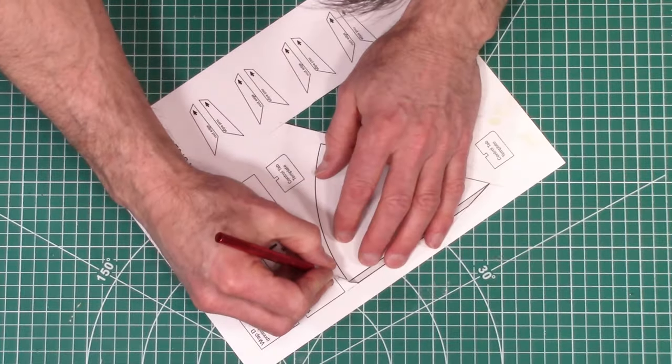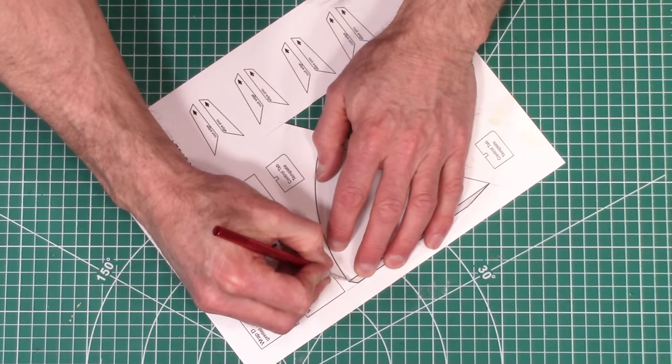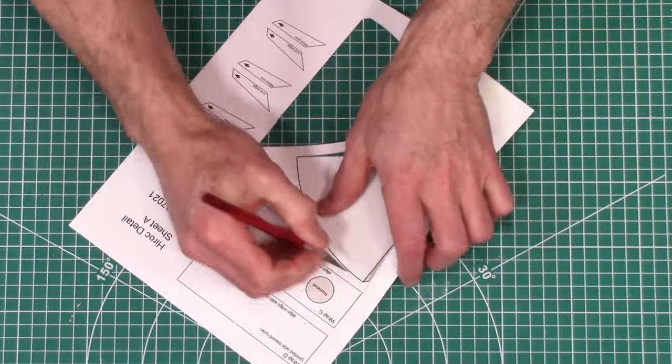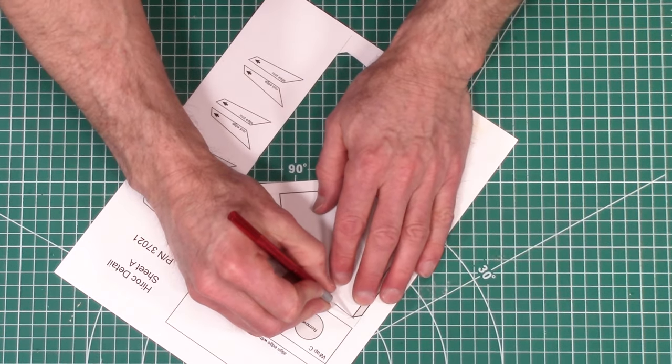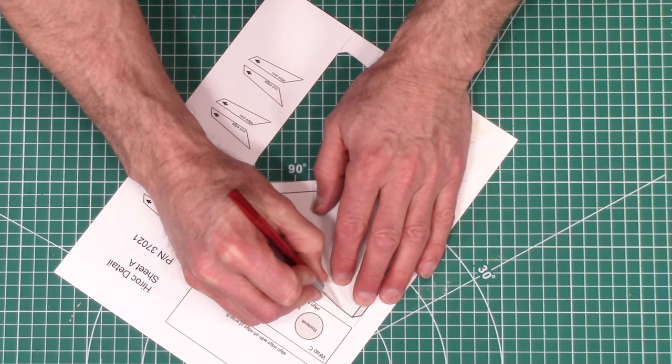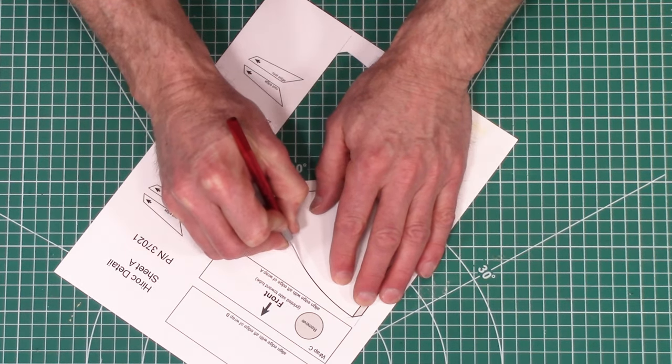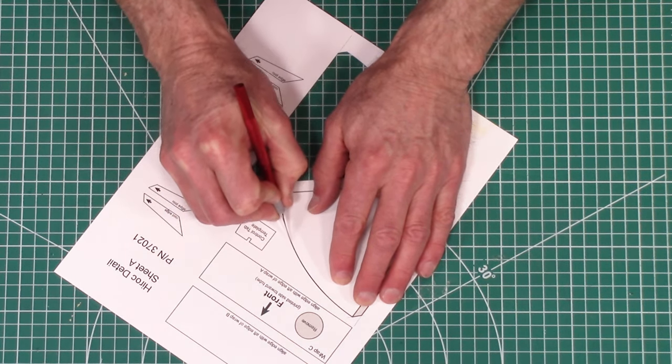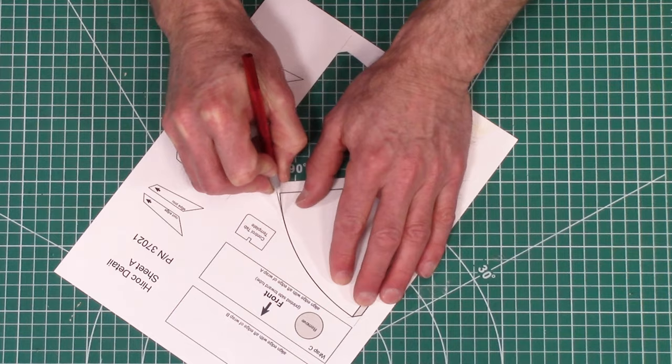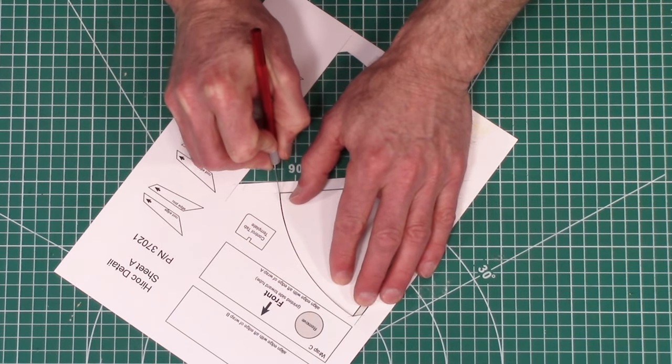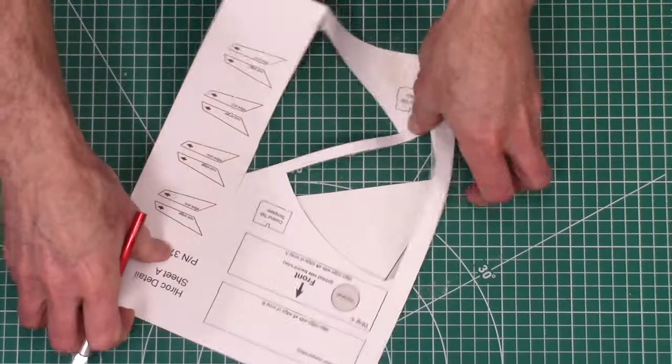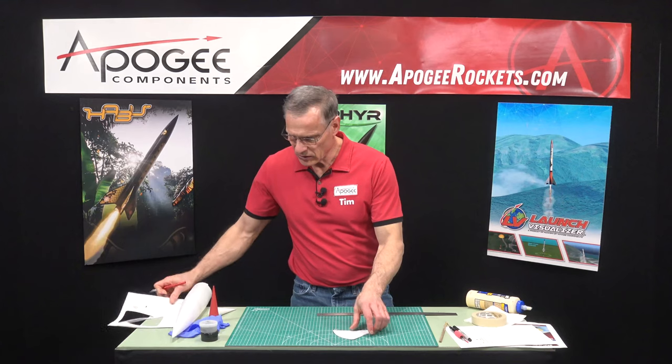All right, so then we're just going to freehand this curved edge. And I've worked very slow just so that my blade goes where I want it to go.